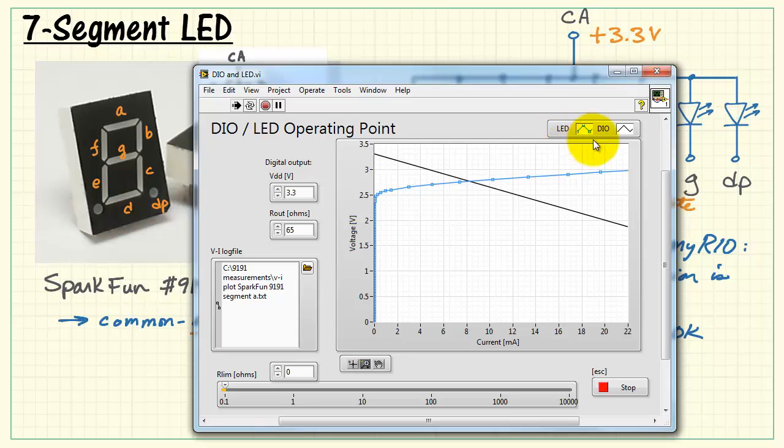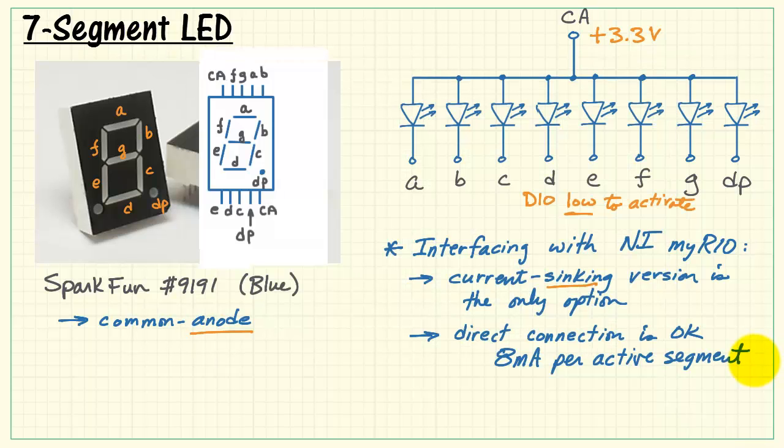Let's take a look at why. Here I'm looking at the voltage current characteristic for the LED. I took some measurements with an Elvis product to get those. Here's the load line associated with the digital output for 3.3 volts and 65 ohms approximately for the output resistance. We see the operating point indicates an 8 milliamp draw for each segment.